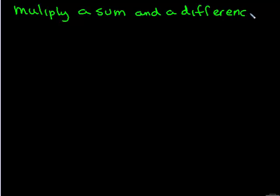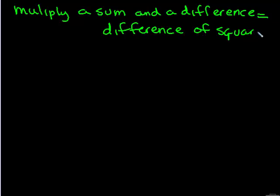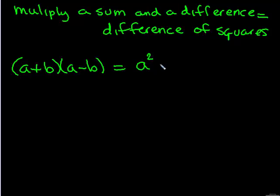The other special product we have is when you multiply a sum and a difference. When that happens you get what's called a difference of squares. For example if I have a plus b times a minus b, that's going to result in a squared minus b squared.